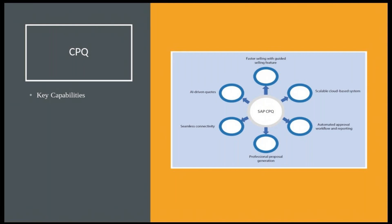For AI-driven quotes, there are pre-built artificial intelligence capabilities included in CPQ, which can give your sales team an extra edge in their sales process. SAP CPQ provides pricing behavior intelligence, real-time predictive analysis, prescribed content recommendations, and guided selling powered by AI.